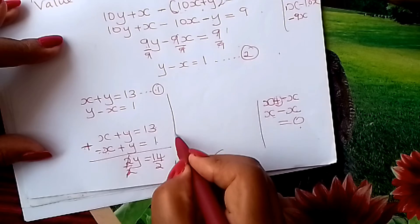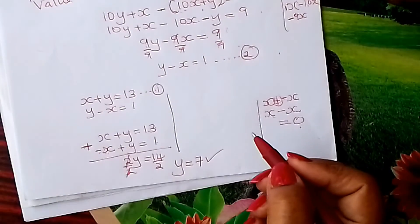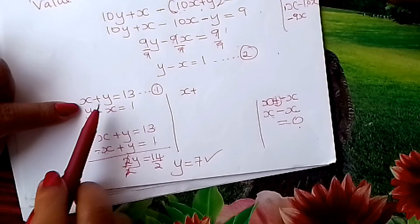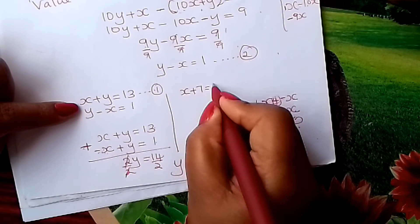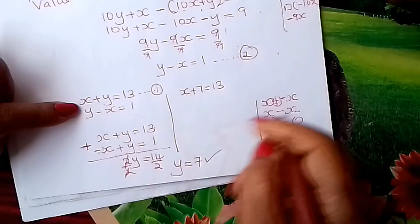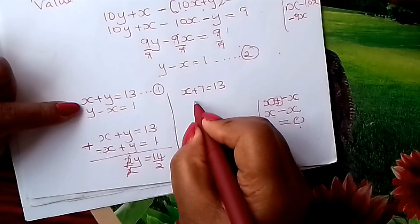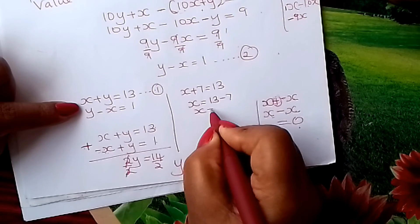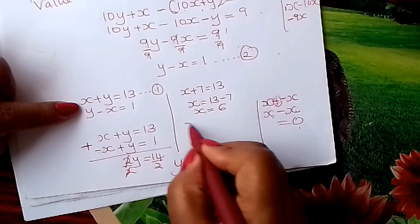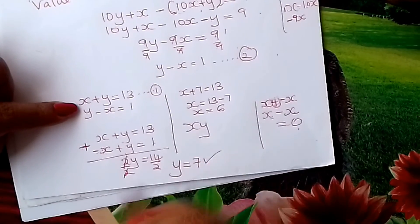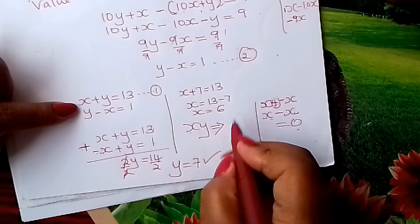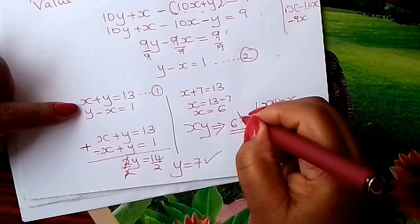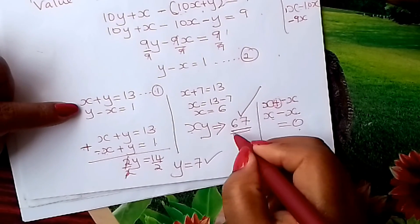So if Y is 7, learner, what is X? You can use the first equation: X plus Y equals 13. Substituting Y equals 7: X plus 7 equals 13, so X equals 13 minus 7. X equals 6. And therefore learner, your original number, which was XY, is therefore X equals 6 and Y equals 7. Your original number is 67.